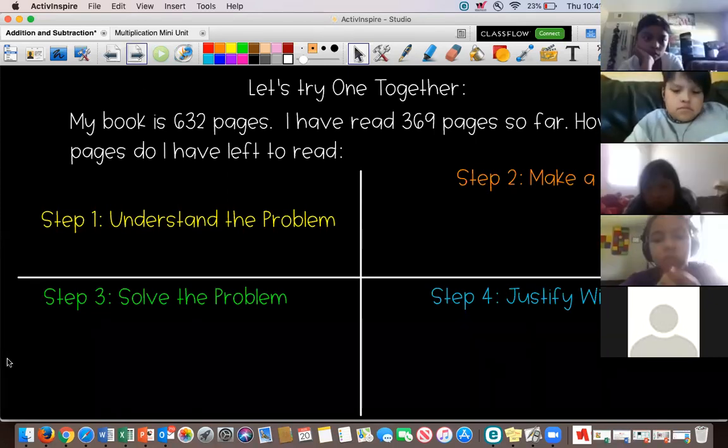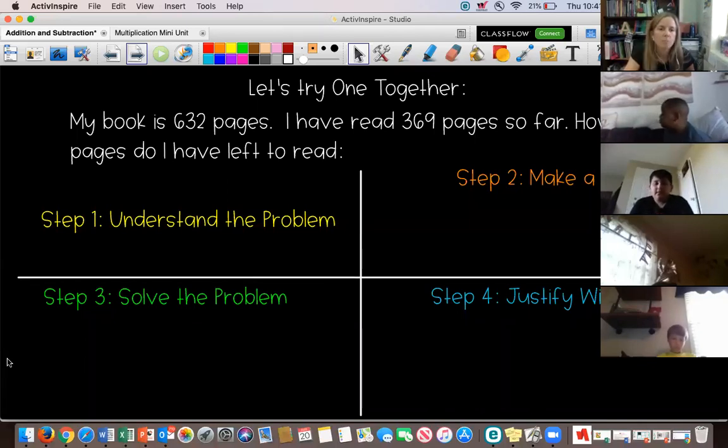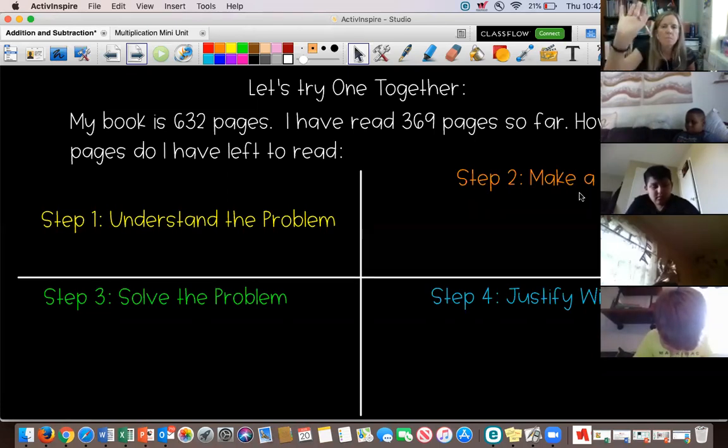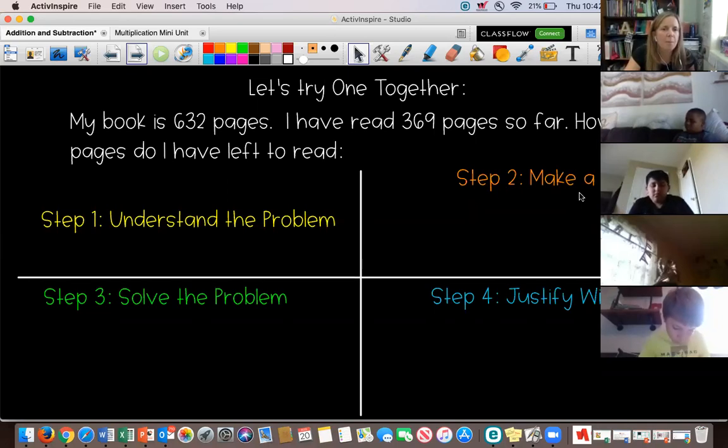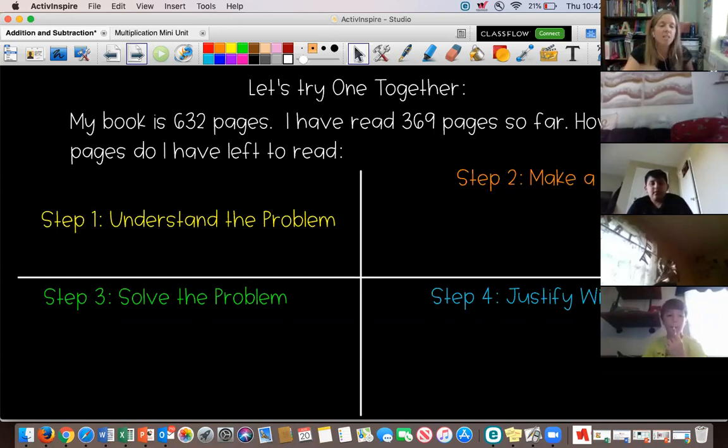Somebody, I need somebody to step up. Somebody step up and tell me what's something in that problem that's going to be important when we try to solve it. There's numbers in there. There's a question. Corbin. Corbin, what's something in there that's going to be important? Make sure you unmute yourself. Go ahead, Corbin. Okay, so yeah. I'm sorry to interrupt. Mr. Hoffman, this story problem doesn't make sense. Your book should be 369 pages and you've read 632 so far. It says my book is 632 pages. I have read 369 pages. Oh, I'm sorry. I'm so sorry. I was, like, dyslexic for a second. I was thinking that it said 362. Sorry. No, that's okay.